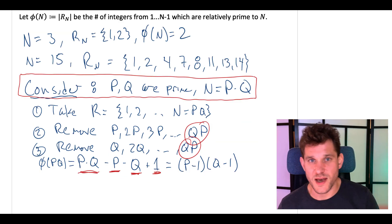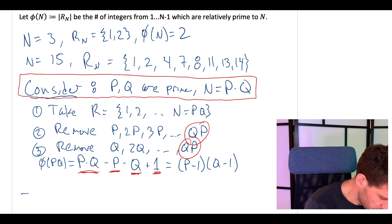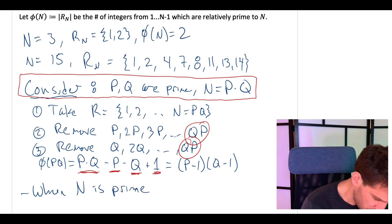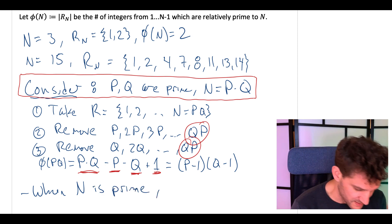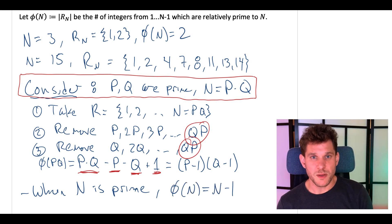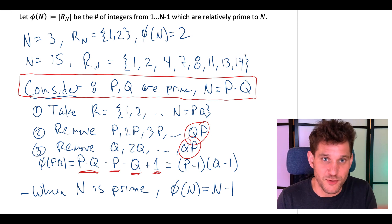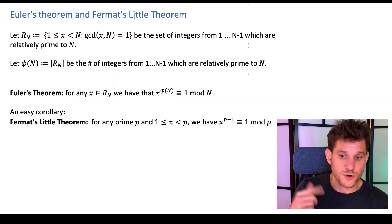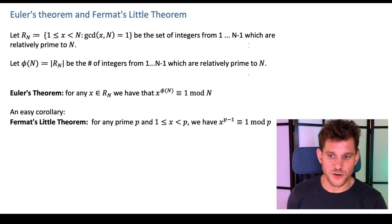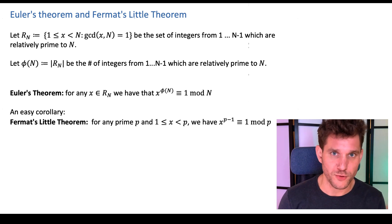One easy case: when n is prime, phi(n) equals n minus 1, because all integers from 1 to n-1 are relatively prime to n. This brings us to the key result: Euler's theorem, and a simple corollary called Fermat's little theorem.